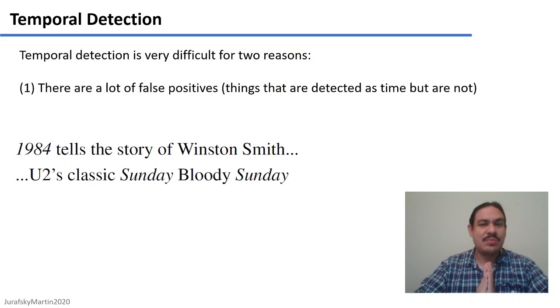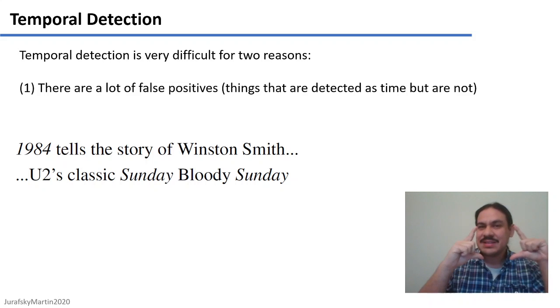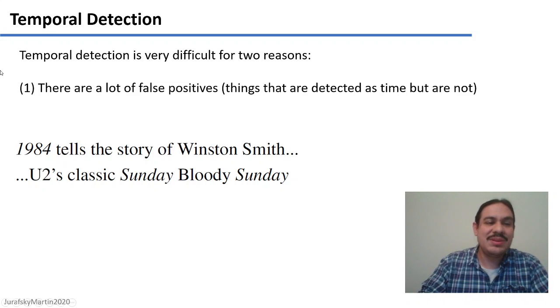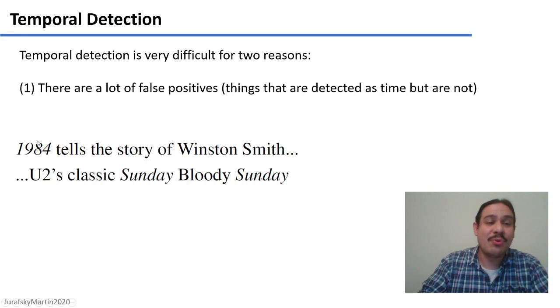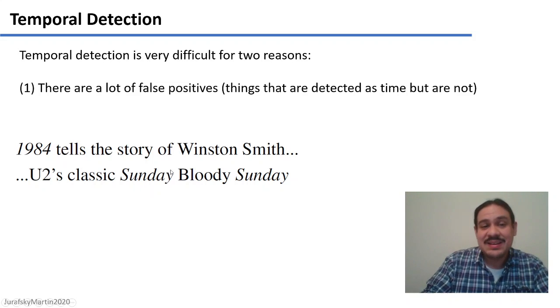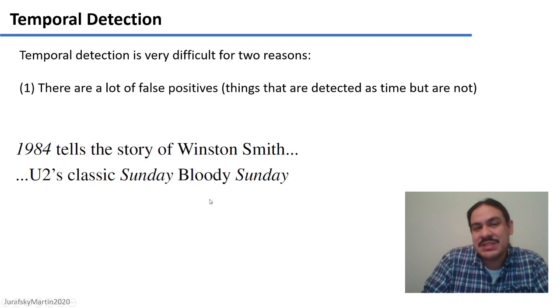This is a very challenging process for at least two reasons. The first one is that it's possible to get a lot of false positives, things that are tagged as time, but they're not really talking about time. For example, here the title of the book, 1984, looks like a year, but really isn't. It's more like a proper noun. And here, there's an album called Sunday Bloody Sunday, where these look like temporal words, but again, they're just the name of something. So these shouldn't be tagged as time.